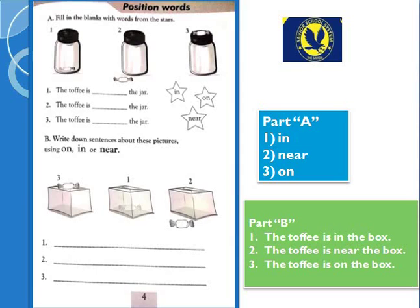Next hai Part B: write down sentences about the pictures using on, in, and near — jin ke saath jaisa aapne upar kiya hua hai. Ab ye boxes di hui hain, in boxes ke saath aapne fill in the blanks fill up karna hai. First picture mein toffee andar hai, next mein saath mein padi hui hai, third mein upar hai. Number first: the toffee is in the box. Number second: the toffee is near the box. Number third: the toffee is on the box. Saath mein maine iska solution likh bhi diya hai — aapne apni book ki upar ye karna hai.